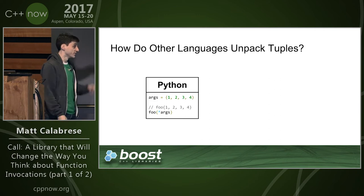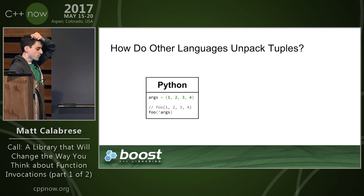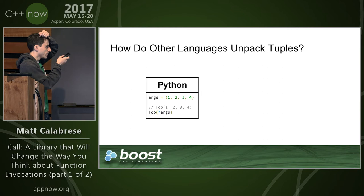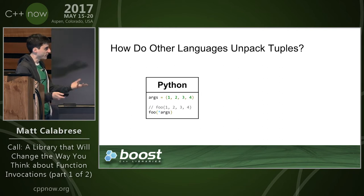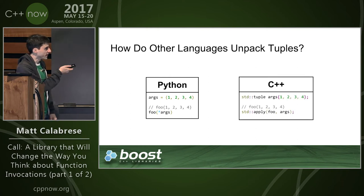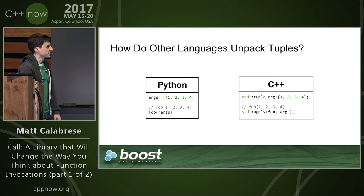How do other languages deal with unpacking tuples? In Python, you just create a tuple and use the asterisk notation — passing '*args' expands everything out as individual function parameters. Comparing that to C++, it's not too bad. Python is a little more concise, but C++ with std::apply is pretty much just as readable in the simple case.